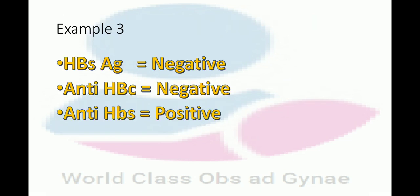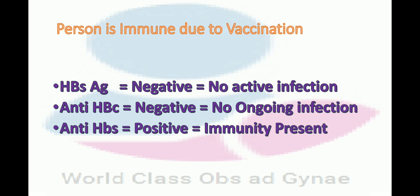Example three: HBs antigen negative, anti-HBc negative, anti-HBs positive. The answer is the person is immune due to vaccination. HBs antigen is negative — no active infection. Anti-HBc is negative — no ongoing infection. Anti-HBs is positive — immunity is present. So the person is immune due to vaccination.